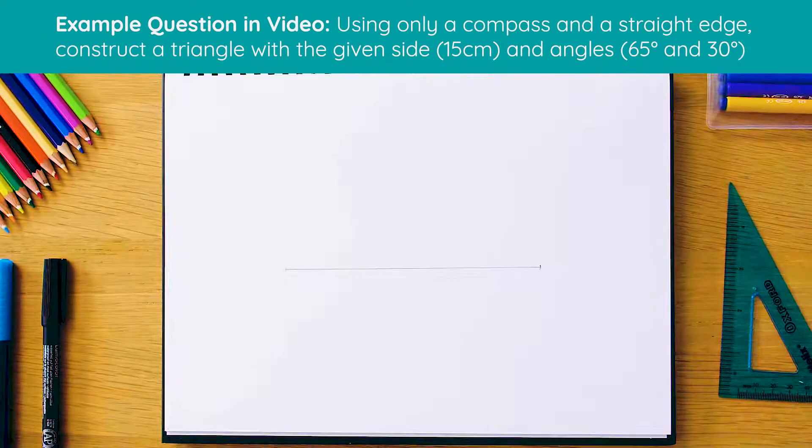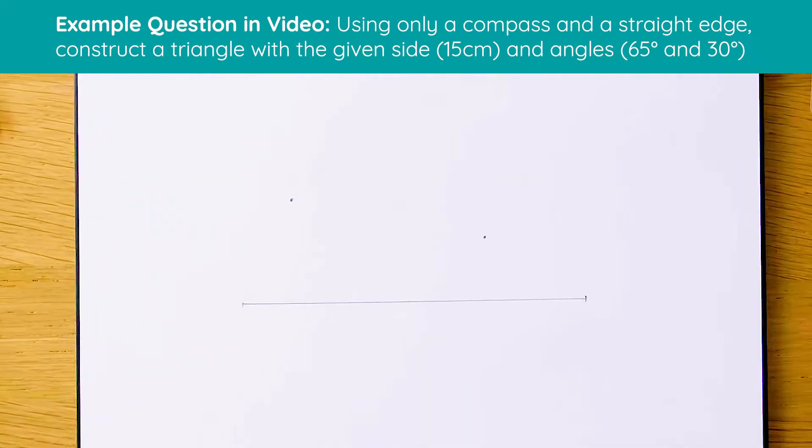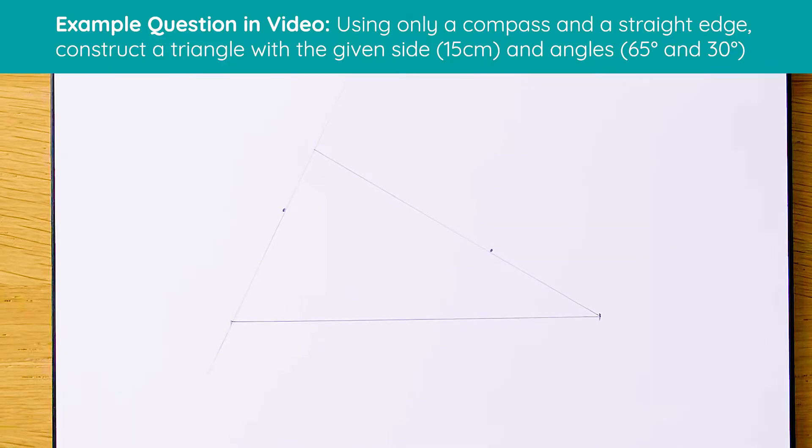This is what it's going to look like once our construction is complete. So we've got our side length drawn and our two angles either side. Let's see how this is going to look now from scratch.